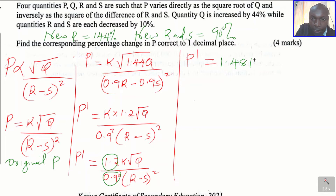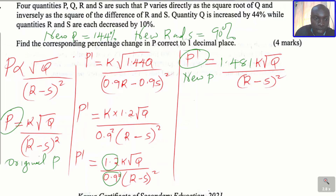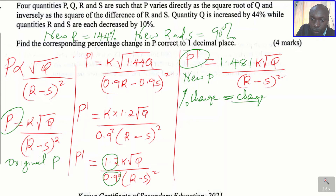So we now have the new P equal to 1.481 times K times the square root of Q, divided by the square root of R minus S squared. This is the new P, and the original is P. The question asks us to find the corresponding percentage change in P. Percentage change equals change divided by the original, multiplied by 100.